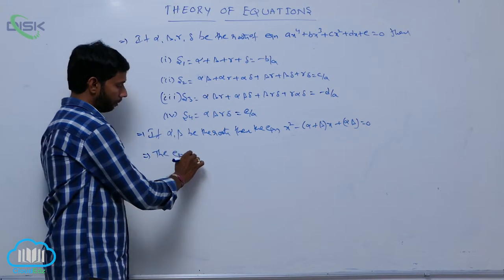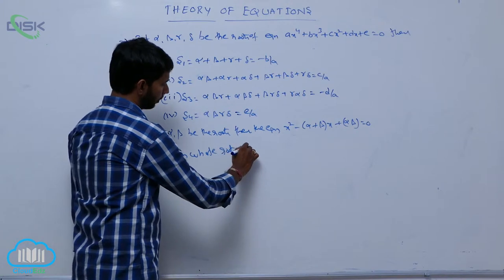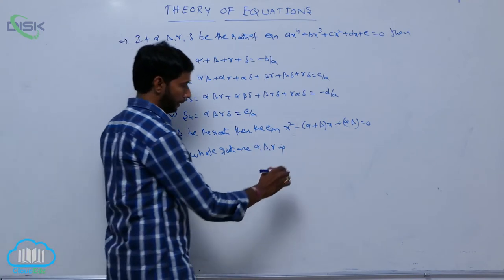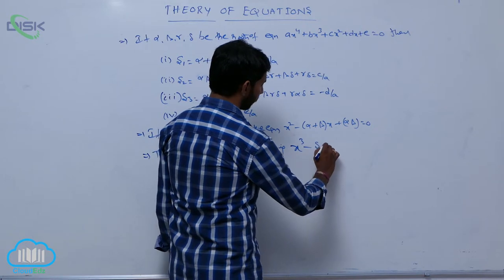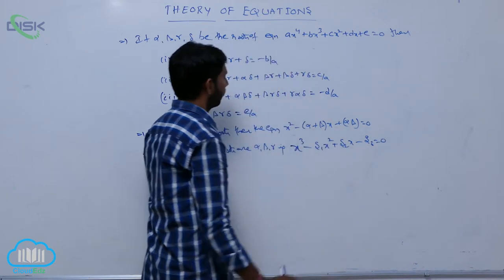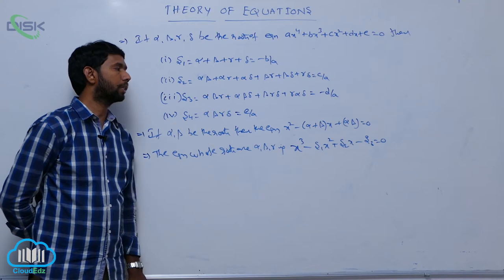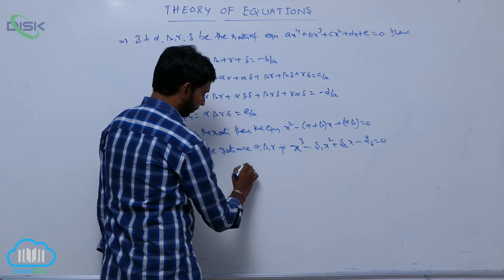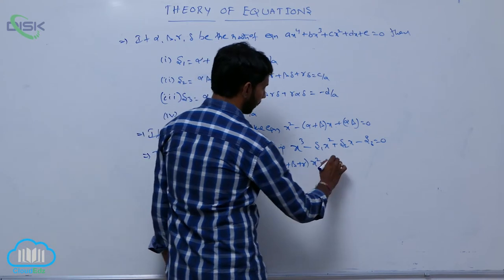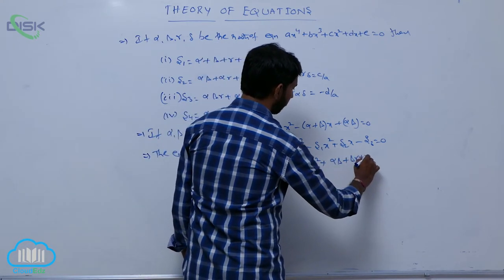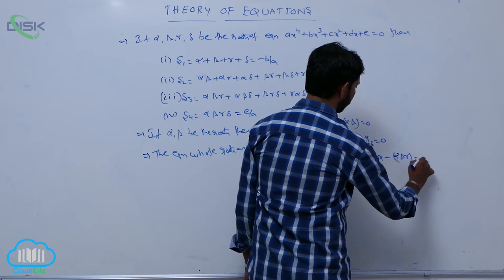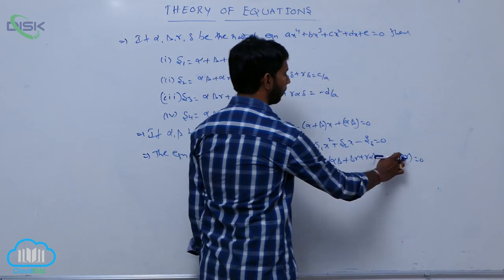The equation whose roots are alpha, beta, gamma is x³ minus S1·x² + S2·x minus S3 = 0. That is, x³ minus (alpha + beta + gamma)x² + (alpha·beta + beta·gamma + gamma·alpha)x minus alpha·beta·gamma = 0.